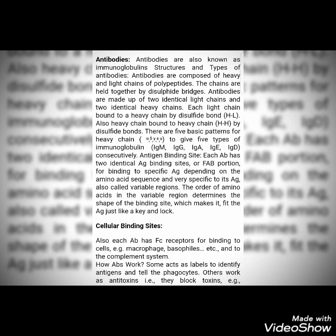Each antibody has two identical antigen-binding sites, the FAB portion, for binding to a specific antigen. Depending on the amino acid sequence, it is very specific to its antigen — also called the variable region. The order of amino acids in the variable region determines the shape of the binding site, making it fit the antigen just like a key and lock.